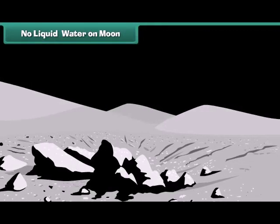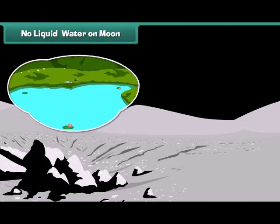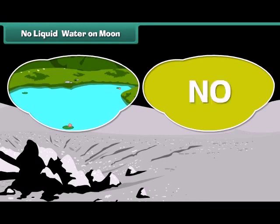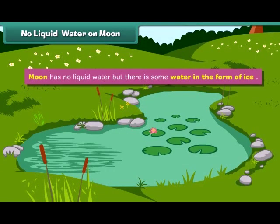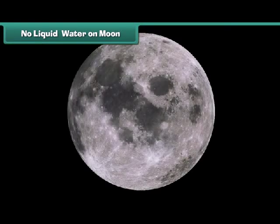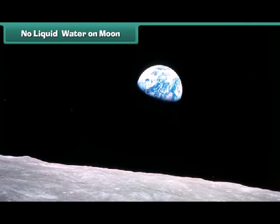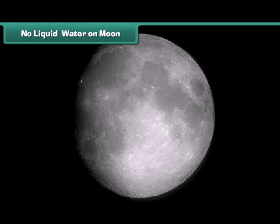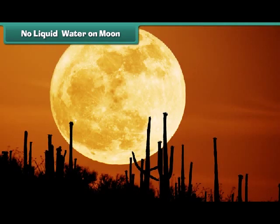Do you think the moon has water like our Earth? There is no liquid water on the moon, but there is some water in the form of ice. Recently, a NASA spacecraft discovered nearly about 100 kilograms of ice and water vapor near the moon's south pole, and it is possible that there is more buried under the surface of the moon.